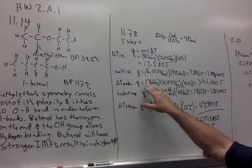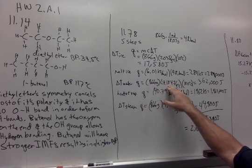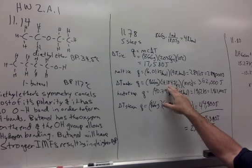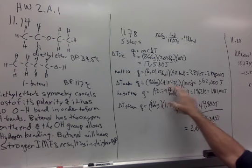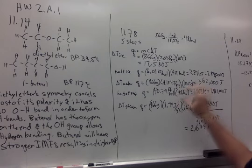Then we have our second step. We're going to warm the water from zero to 100, so that's 866. I got the 4.184 number for water out of table 6.2 back in chapter 6, and we're changing the temperature by 100 degrees Celsius, so that's 362,000 joules.